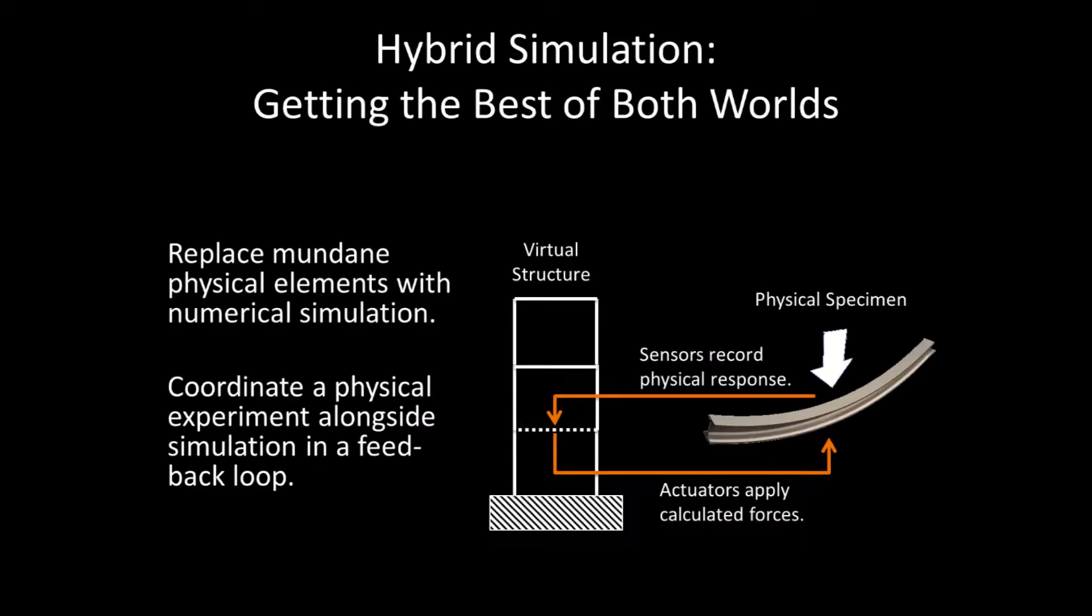In our hybrid simulation, we simulate parts of the structure where we are able. In this example, we cannot simulate the first floor deck, so we construct a physical replica. This physical specimen is then connected to a set of actuators and sensors that allow the virtual structure and the physical specimen to interact.